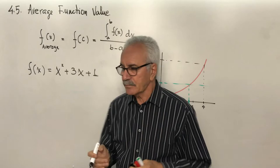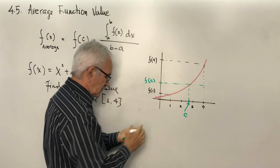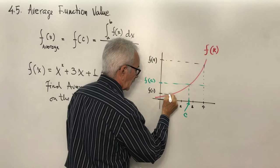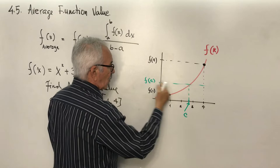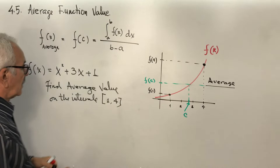On the interval from 1 to 4, this is a parabola. Between 1 and 4, we are looking for a C value where the function gets the average value. Let's solve the problem. As we learned, the integral from 1 to 4 of x² + 3x + 1 dx.